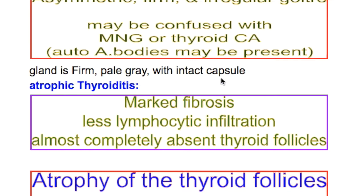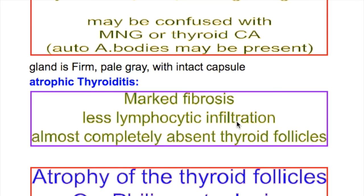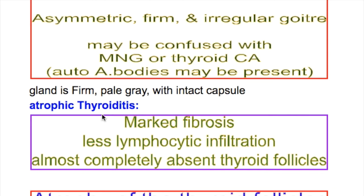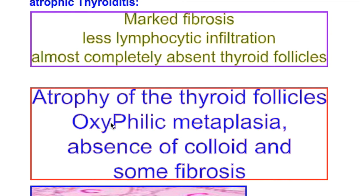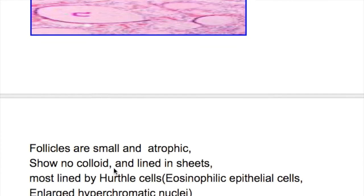What is the gross pathology? The gland is firm and pale gray with an intact capsule. Histopathologically, in Hashimoto's thyroiditis there is marked lymphocytic infiltration with some fibrosis and absent thyroid follicles. In atrophic thyroiditis there is marked fibrosis, less lymphocytic infiltration, and almost completely absent thyroid follicles, with atrophy of the thyroid follicle, oxyphilic metaplasia, absence of colloid, and some fibrosis.